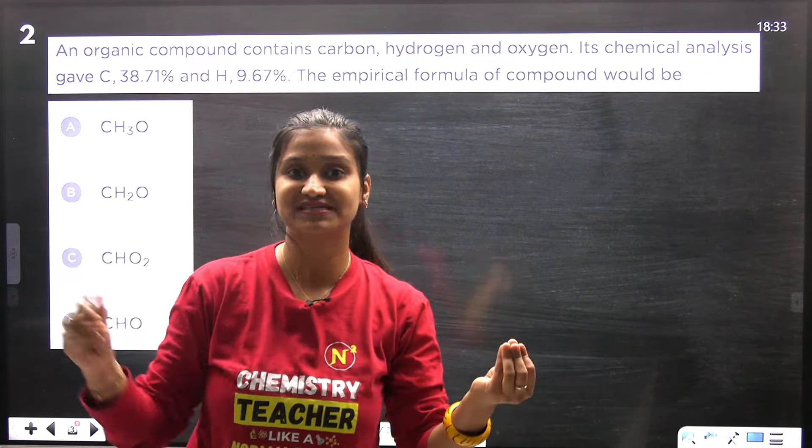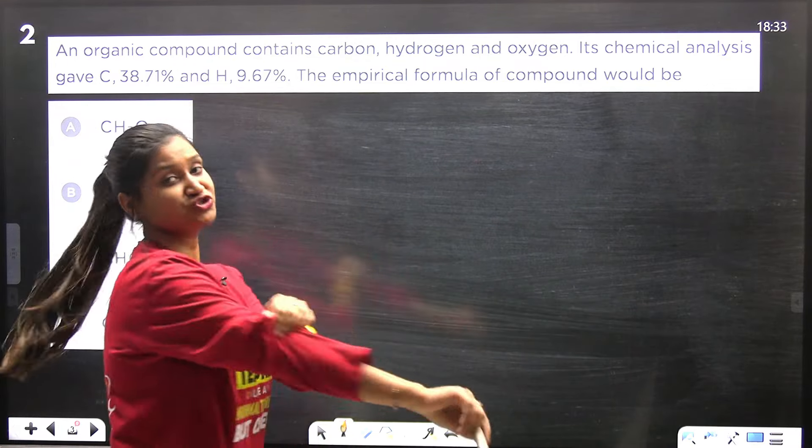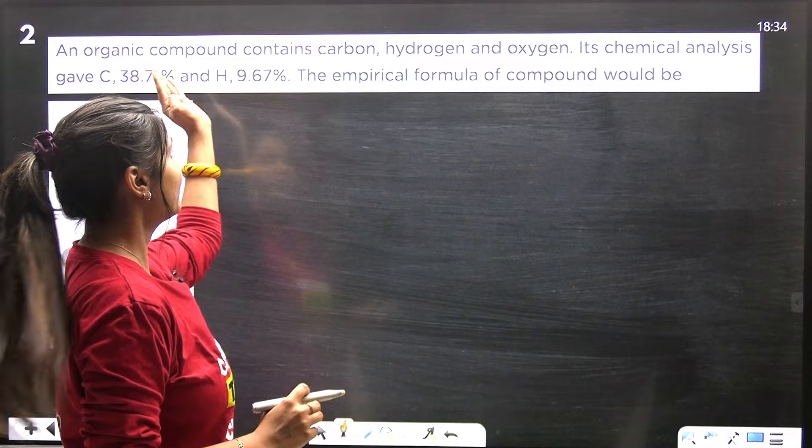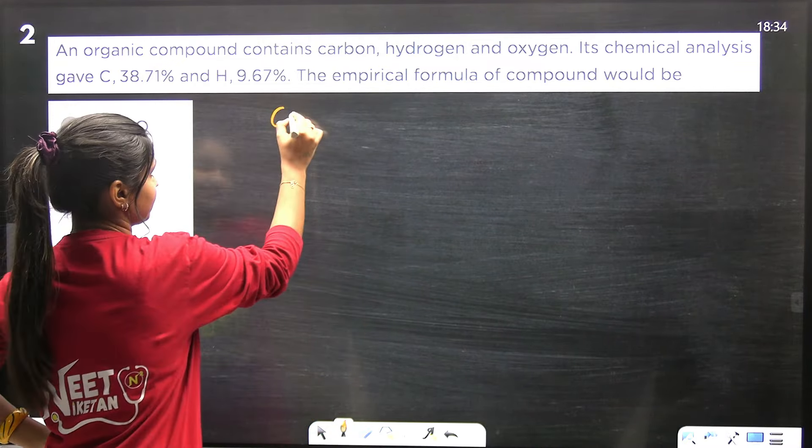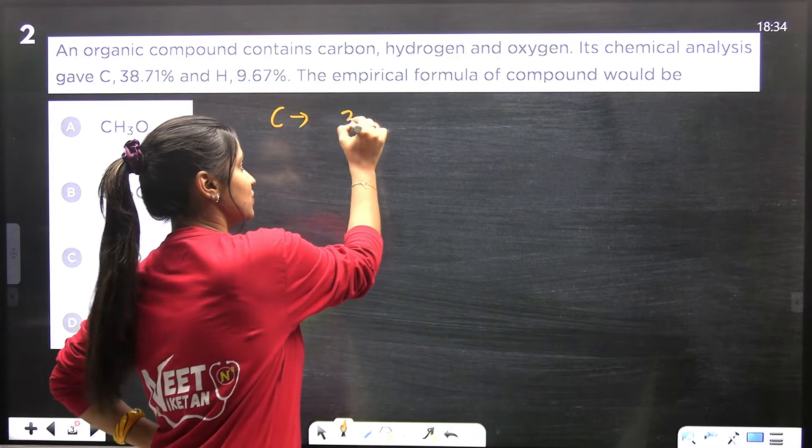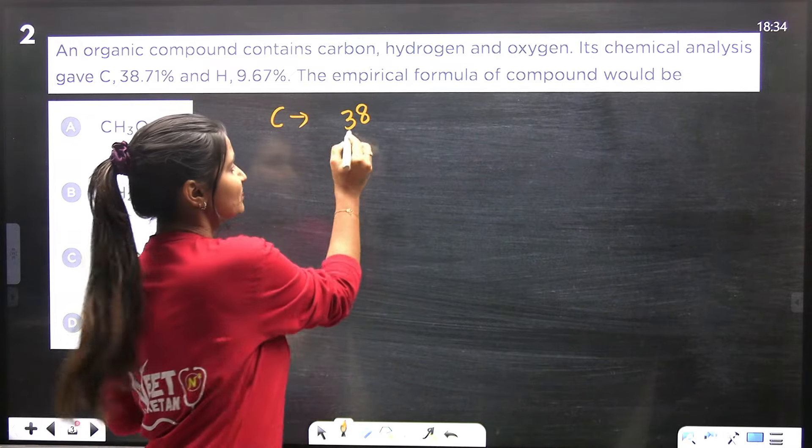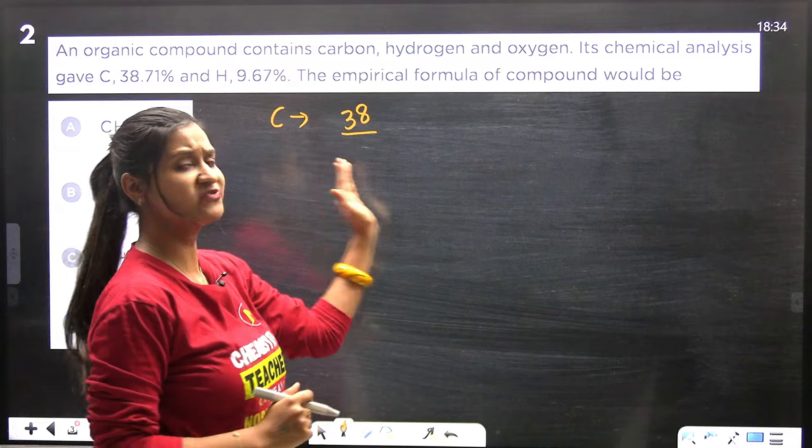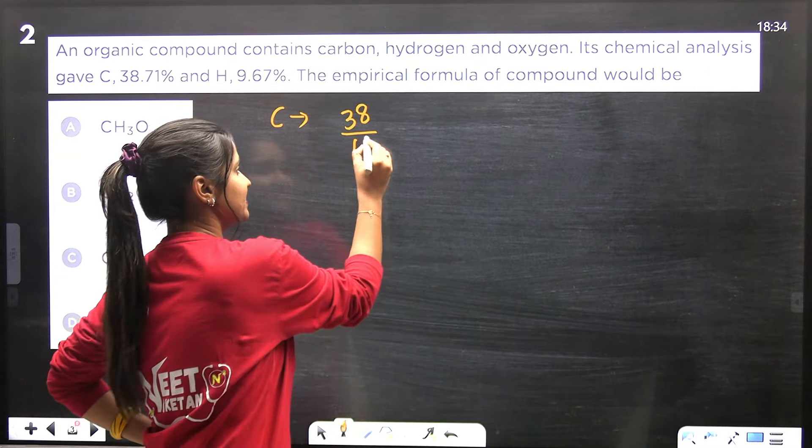For this, let's assume we have 100 grams of compound. Then we can directly convert percentage to grams. If we talk about carbon, it comes out to be 38 grams. This is the given weight. Now let's talk about number of moles. Given weight by molecular weight, so for carbon it comes out to be 38 over 12.